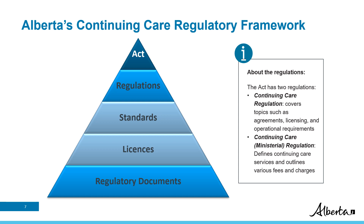We monitor sectors who provide supportive living accommodations, continuing care homes, and home and community care providers. To provide assurance, our branch provides oversight on who requires a license, and we inspect and monitor compliance to the Act, regulations, and standards where applicable, and the health, safety, and well-being of individuals in the continuing care system.